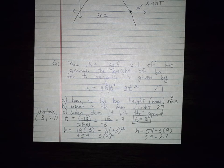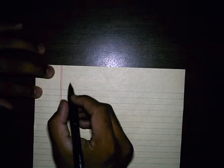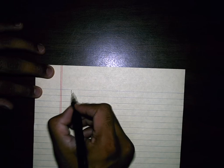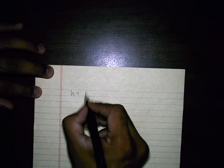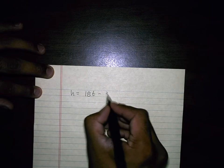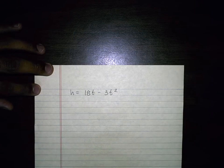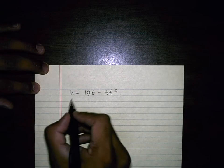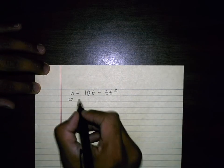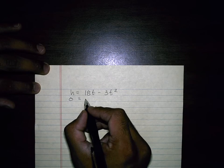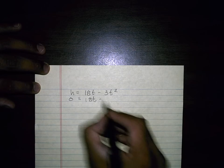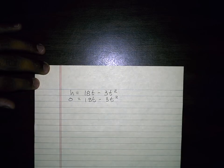To figure out when it hits the ground, we have to find the intercepts. So I'm going to say, alright, the original equation was h equals 18t minus 3t squared. So when it hits the ground, you've got to remember the height is 0. So I can make h 0, and this is a quadratic, right?